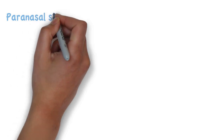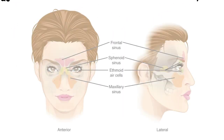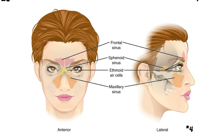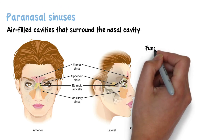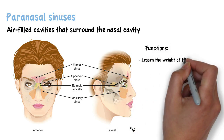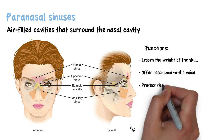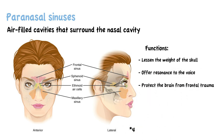The paranasal sinuses are air-filled cavities that surround the nasal cavity. There are four paranasal sinuses: the maxillary sinuses, the frontal sinuses, the ethmoidal sinuses (also called ethmoidal air cells), and the sphenoid sinuses. The functions of these sinuses are to lessen the weight of the skull, offer resonance to the voice, and protect the brain from frontal trauma.